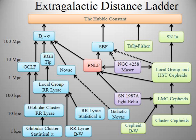Historically, observations of transits of Venus were crucial in determining the AU. In the first half of the 20th century, observations of asteroids were also important. Presently the orbit of Earth is determined with high precision using radar measurements of distances to Venus and other nearby planets and asteroids, and by tracking interplanetary spacecraft in their orbits around the Sun through the Solar System.